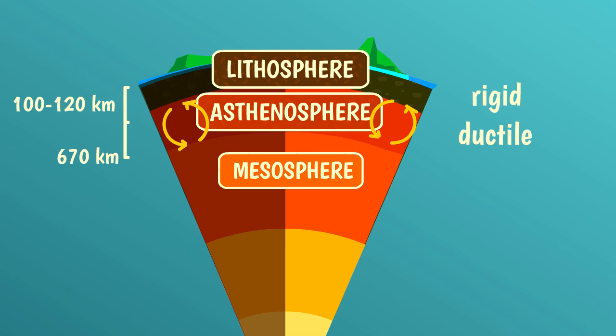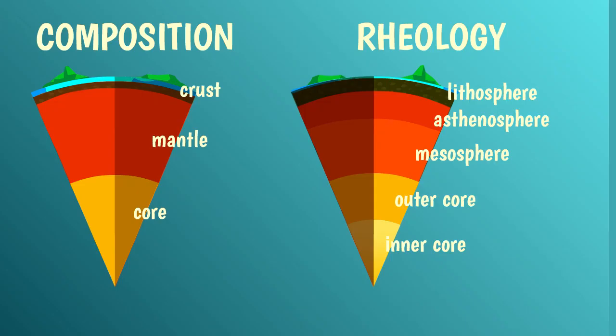To summarize, when we look inside our planet, in addition to the layers with different chemical composition — core, mantle, and crust — we can also recognize five rheological layers: the lithosphere, which is rigid; the asthenosphere, which is ductile; the mesosphere; the outer core, which is the only liquid layer; and finally the inner core.